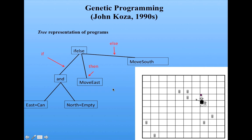Now he's in a new situation, so he follows the strategy again. Is there a can to the east of me and the north empty? No — then follow the second branch: move south. He does it again: there's not a can to the east and the north isn't empty, so move south. This isn't a very good strategy, but this illustrates what it is for him to follow it — a different kind of representation than what we saw before.